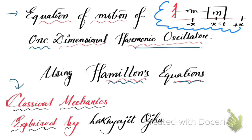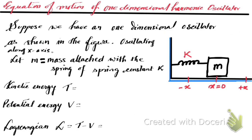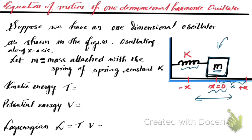So let's start. Suppose we have considered a harmonic oscillator as shown in the figure. Here m is the mass of the block which is attached to a spring with spring constant k. The mean position is at x equal to zero and the block is oscillating along the x-axis. The displacement is x.